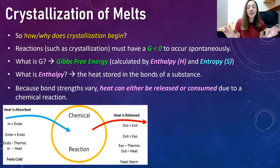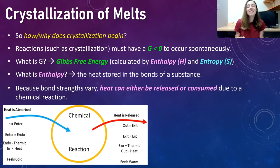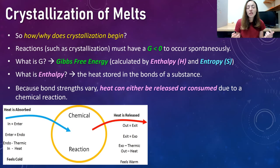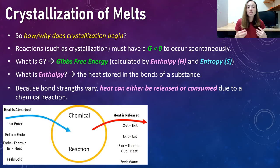Gibbs free energy is the amount of energy released by a chemical reaction that can be used for chemical work. Don't worry, we're going to walk through this step by step. Basically, Gibbs free energy is calculated by using two main variables: enthalpy and entropy. Enthalpy is heat stored within the bonds of a substance.